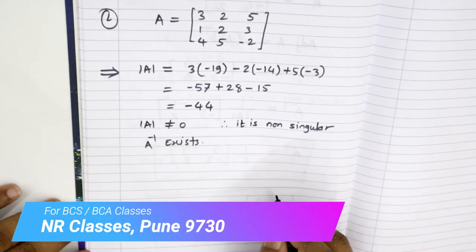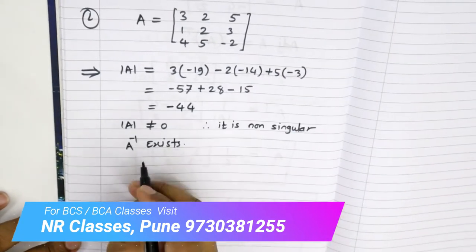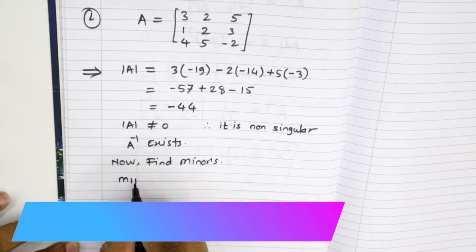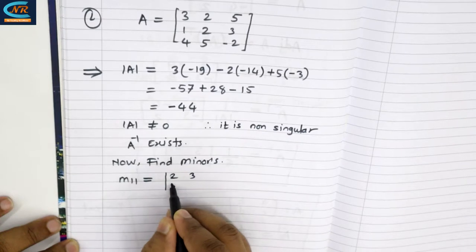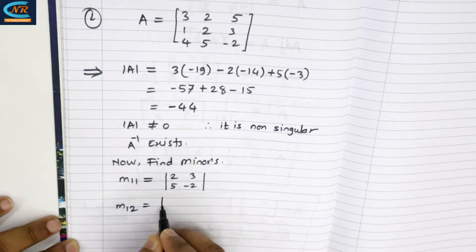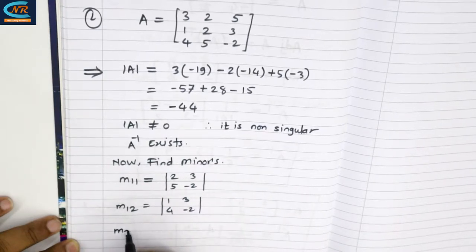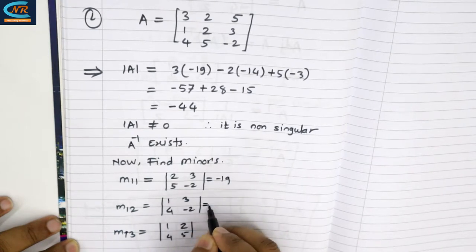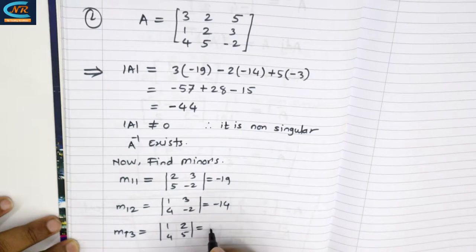After this conclusion, we have to write down the minors and cofactor matrix. M11: by deleting the first row and first column, we get 2, 3, 5, minus 2, giving minus 19. M12: by deleting the first row and second column, we get 1, 3, 4, minus 2, giving minus 14. M13: by deleting the first row and third column, we get 1, 2, 4, 5, giving minus 3.